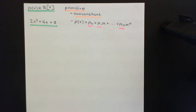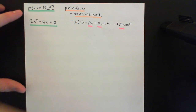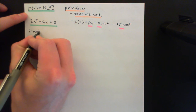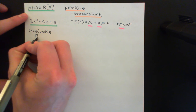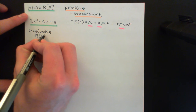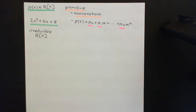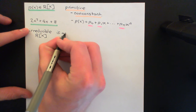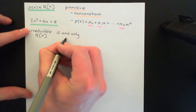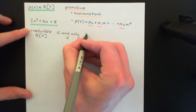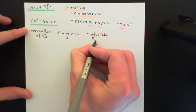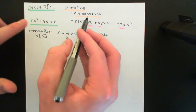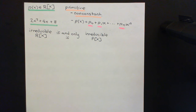Here comes the actual theorem. The theorem is that this polynomial P(x) will be irreducible in the ring of polynomials over the unique factorisation domain if and only if it is irreducible in the ring of polynomials over the fraction field F[x]. Note that this only works if your polynomial is a primitive polynomial — you cannot conclude this for non-primitive polynomials.